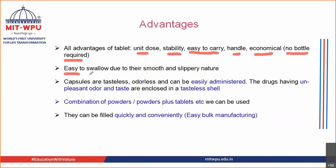Apart from all the advantages of tablets, capsules have one additional advantage — they are easy to swallow. The oval shape of the capsule makes it very easy to swallow, and moreover, the capsule shell has a smooth and slippery nature which makes them even easier to swallow compared to tablets.